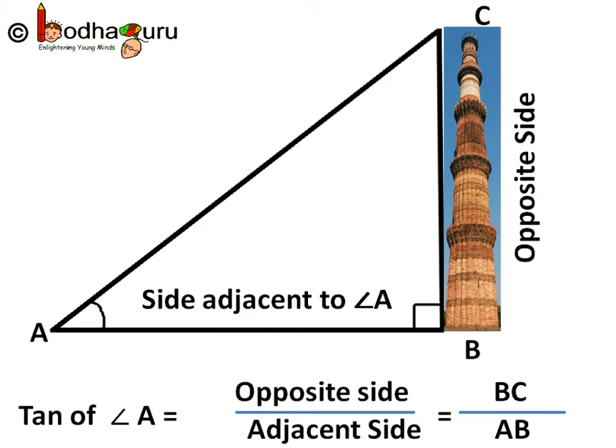Tangent of angle A is also called tan of angle A. So tan of angle A is equal to ratio of opposite side which is BC and the adjacent side which is AB.